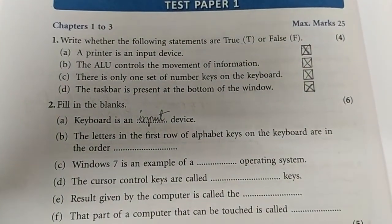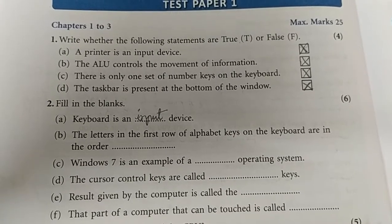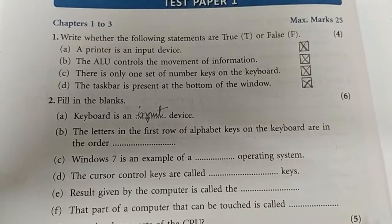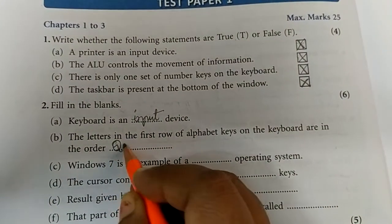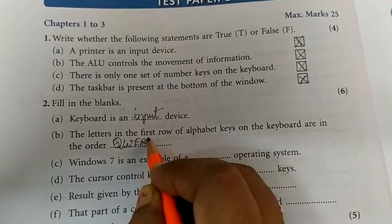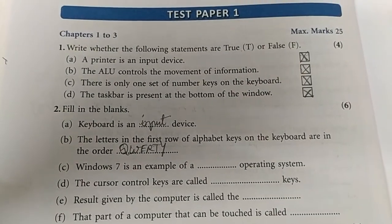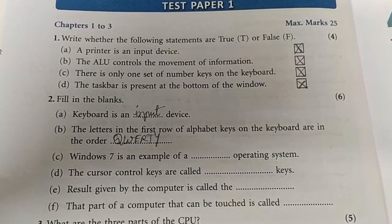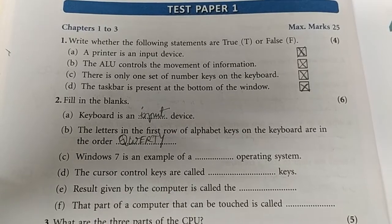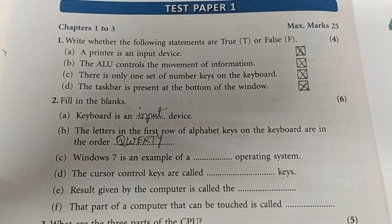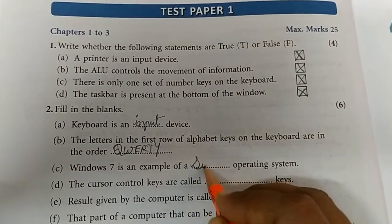B: The letters in the first row of alphabet keys on the keyboard are in which order? Alphabetically? No — QWERTY. This is from lesson number 2, keyboard. Third one: Windows 7 is an example of a single-user operating system.